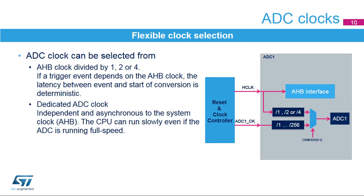The ADCs have a selectable clock source. When the system needs to run synchronously, the AHB clock source is the best selection. If a slow CPU speed is required but the ADC needs a higher sampling rate, the dedicated ADC clock can be selected.